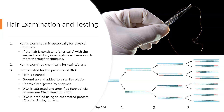Hair examination and testing: hair is first examined microscopically for physical properties. The physical examination can reveal cuticle differences, medulla differences, and cortical differences, especially when comparing animal versus human hairs. The physical examination is always step one — we don't want to jump to chemical and forensic testing without physically examining it first, because many chemical tests break down the protein and make the hair useless for subsequent physical examination. If the hair is physically consistent with a suspect or victim, investigators will move on to more thorough techniques, such as examining the hair chemically for toxins and drugs.